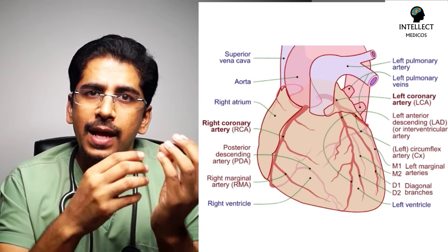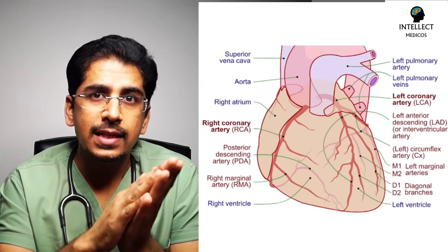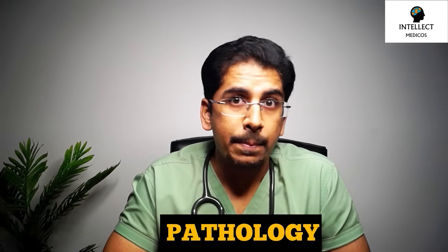The heart functions as a pump, pumping blood to and receiving blood from the entire body. The heart itself receives its blood supply from the coronary arteries. Any pathology in the coronary arteries causes ACS, encompassing all three entities: STEMI, NSTEMI, and unstable angina.